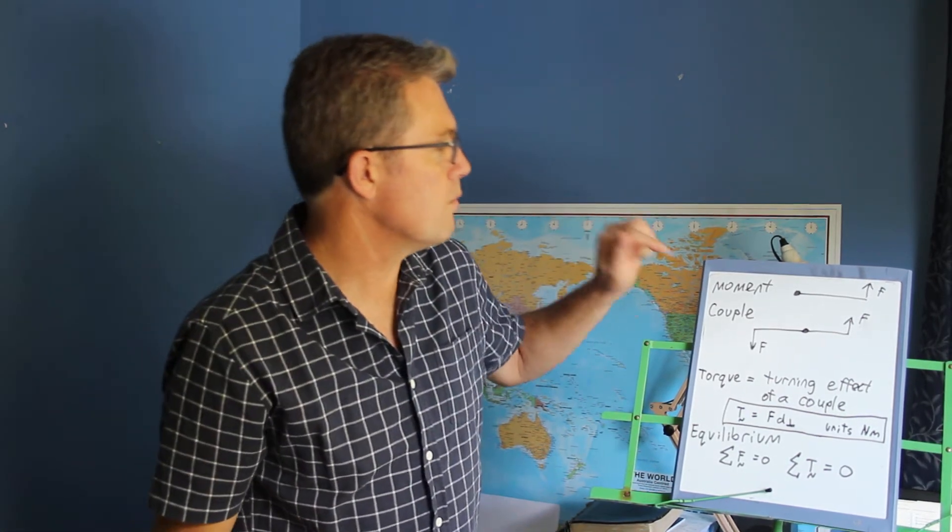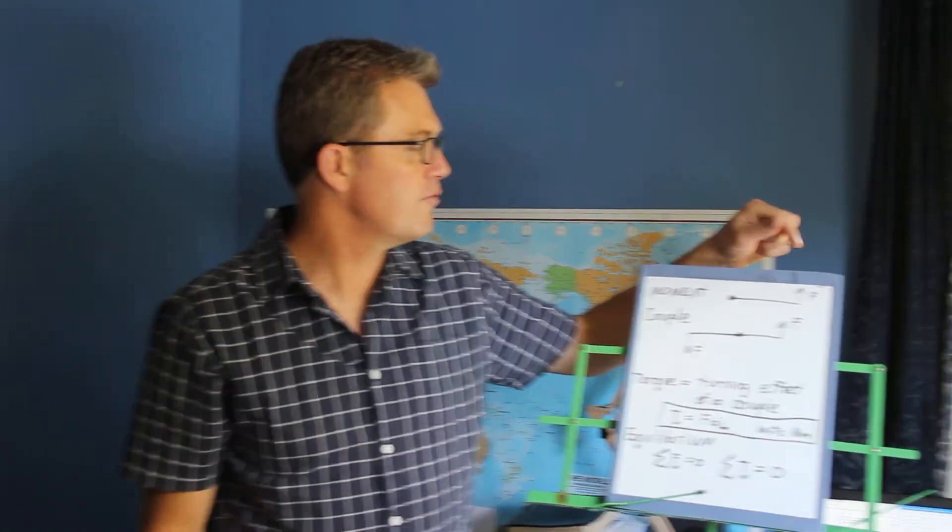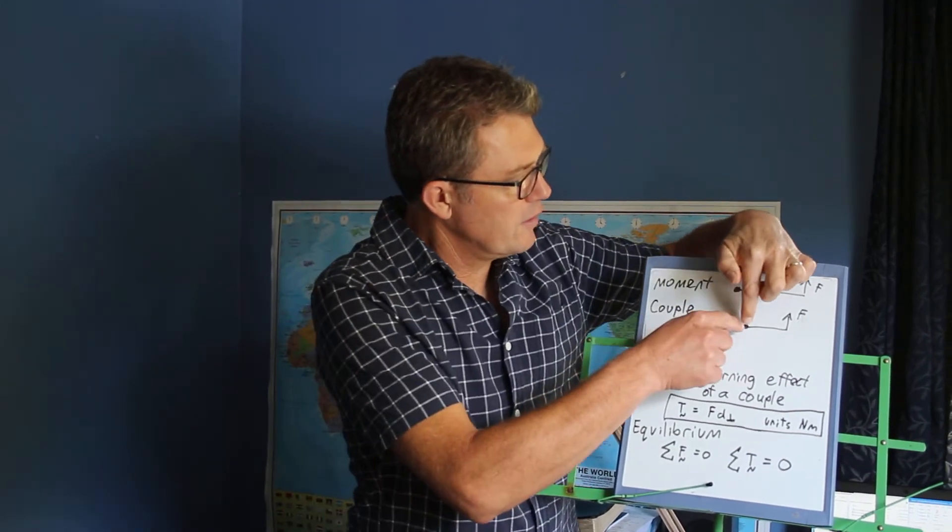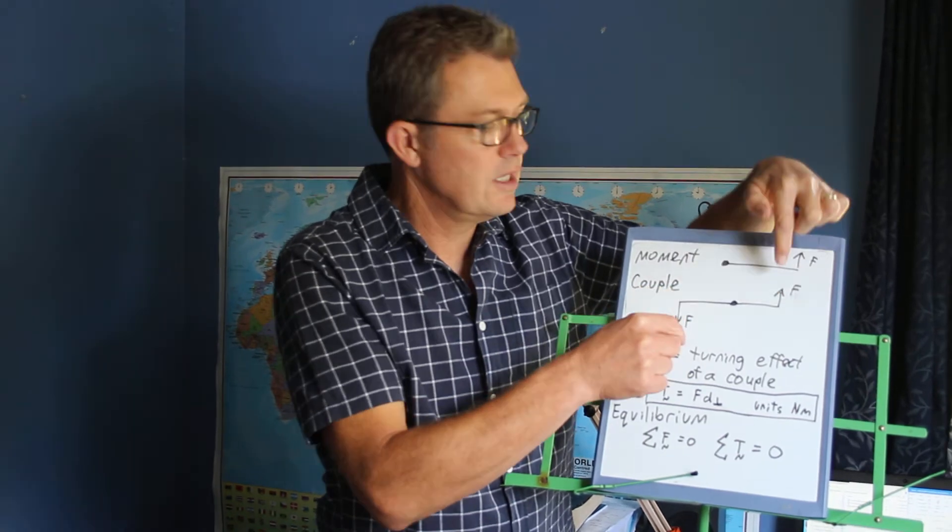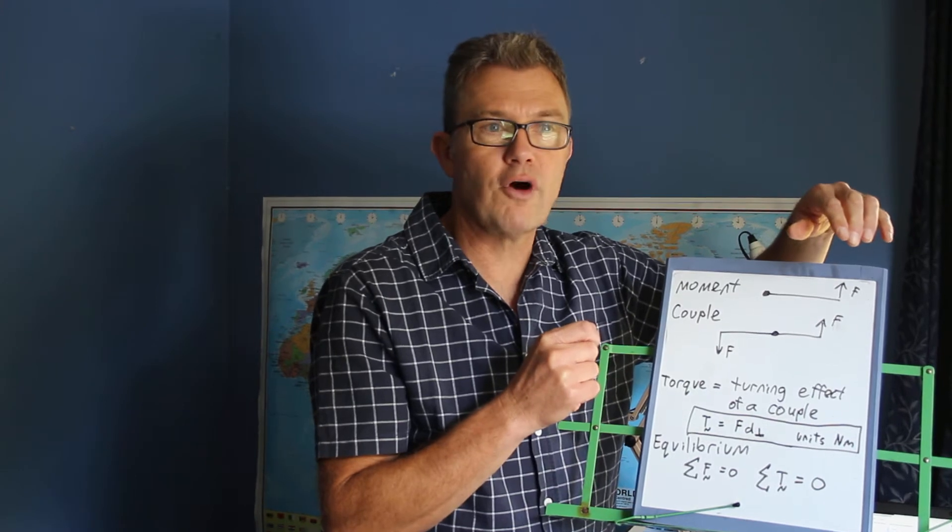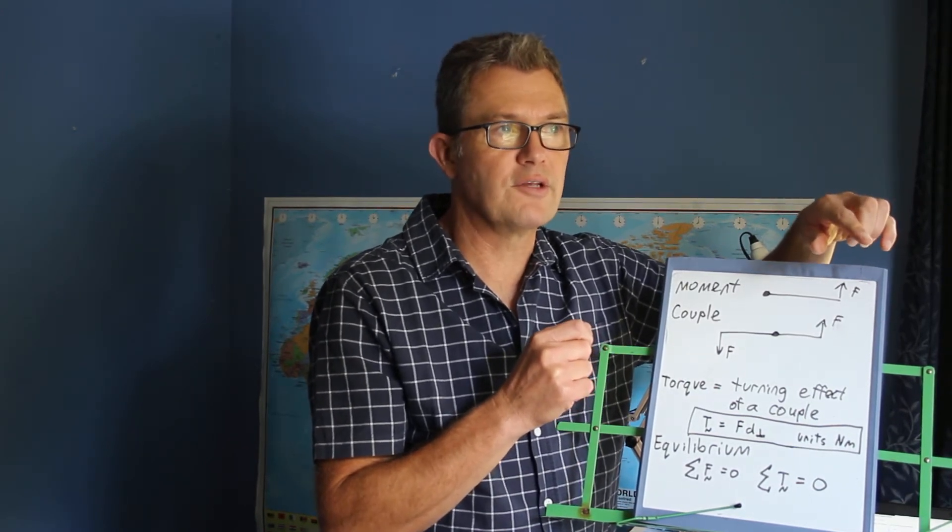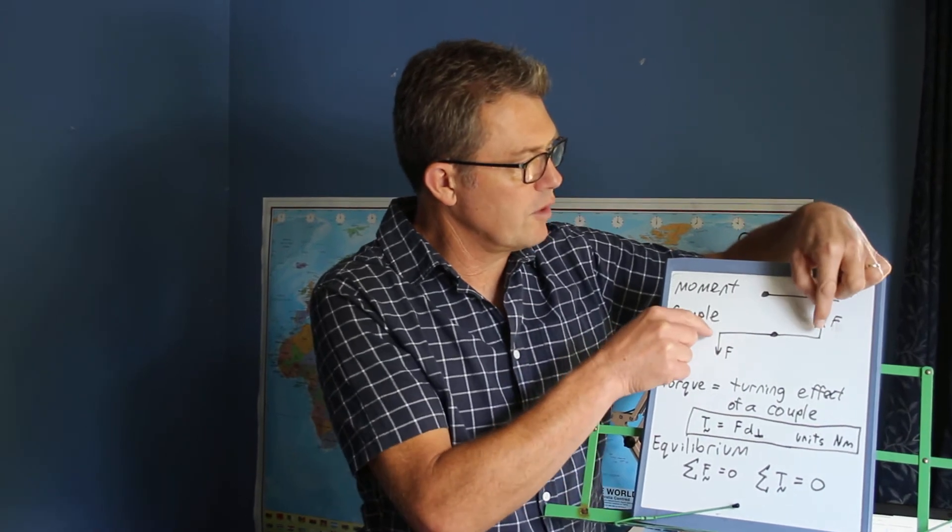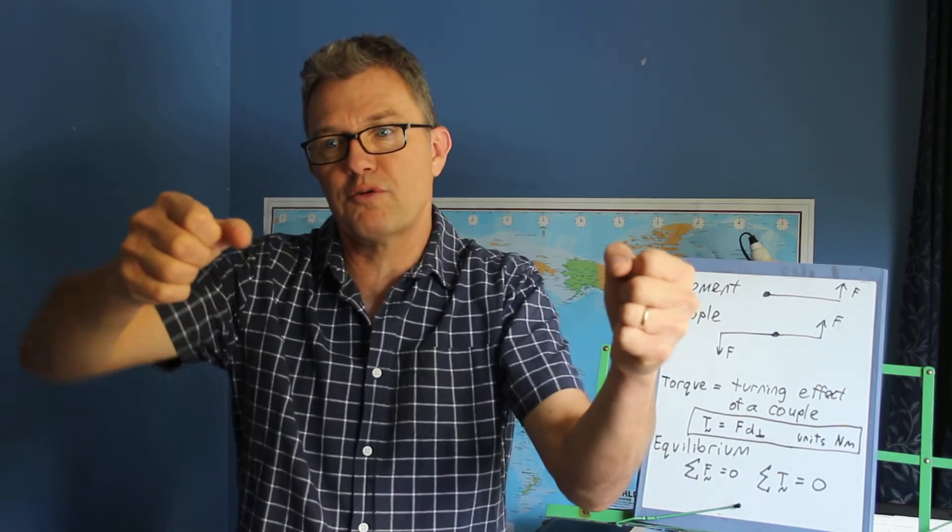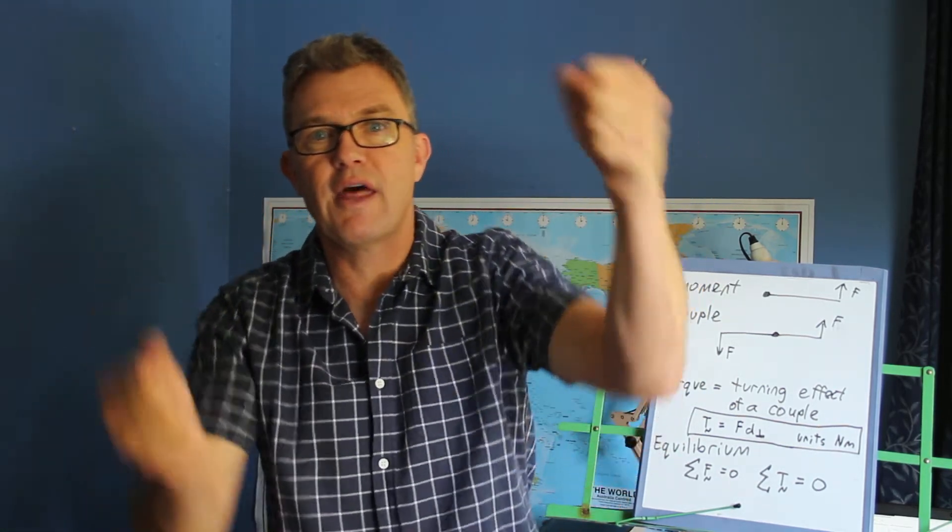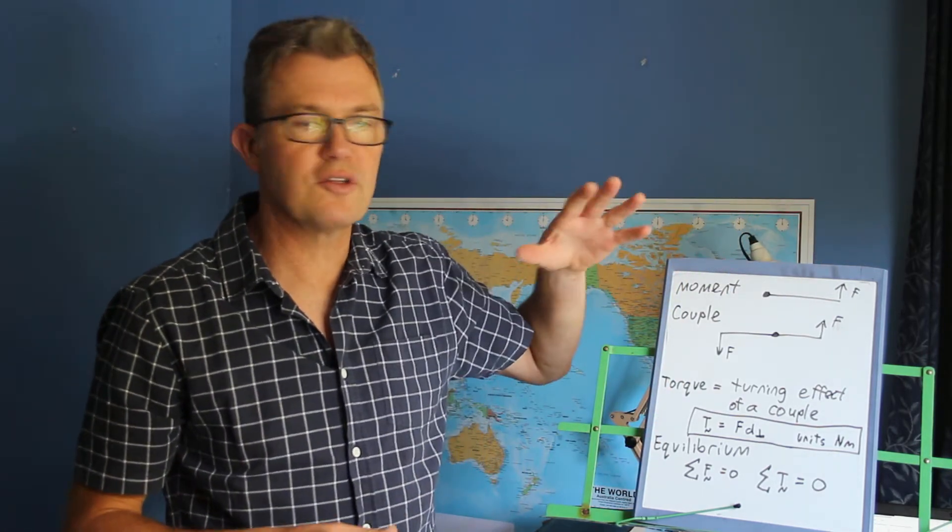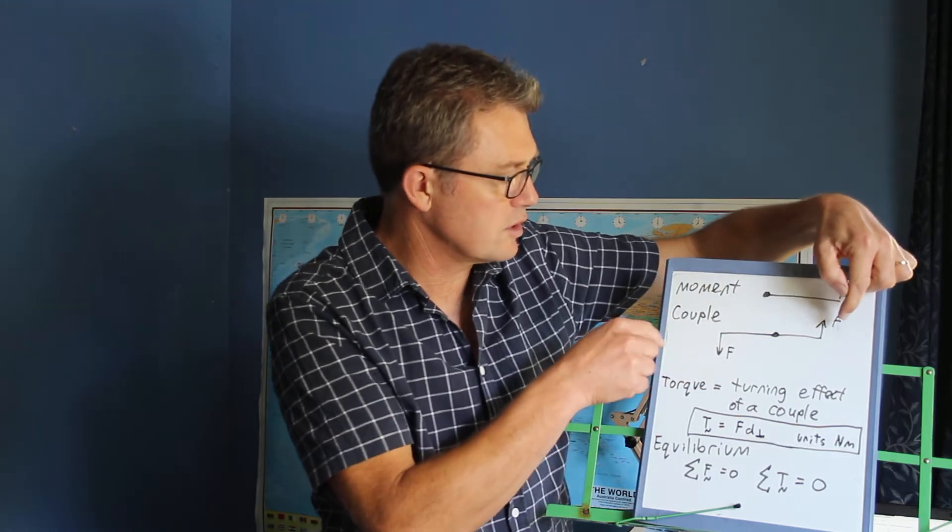So the moment is actually the turning effect of a force. A couple is when you've got a pivot and you've got two forces in opposite directions equal distance from that pivot. If you're turning a steering wheel on a car and you have your two hands like this, one's pushing up, the other's pushing down, you're turning your steering wheel that way. That's a couple. Equal forces in opposite directions, equal distances from a pivot.